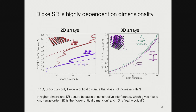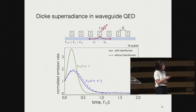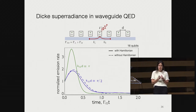Now switching to waveguide QED. Here we have a collection of qubits that can decay into a one-dimensional channel at a rate different for left and right photon emission, plus some parasitic local decay gamma-prime. We put it in the computer for up to 16 qubits, plot the normalized emission rate versus time, and see that indeed we have a superradiant burst. The intensity changes with the distance between qubits. Whether we include a Hamiltonian evolution or not doesn't seem to affect the dynamics very much — good news, since all the insights from free space about jump operators and competition map onto waveguides as well.